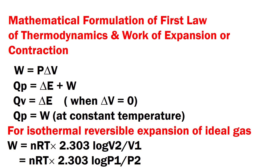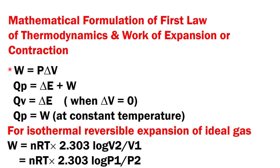Before starting the problems, let's recapitulate the formulae. The pressure-volume work done by the gas or done on the gas is given by constant pressure P into change in volume. The heat exchanged at constant pressure, according to the first law of thermodynamics, equals the change in internal energy plus the pressure-volume work. When work is done by the gas, the sign is negative; when work is done on the gas, the sign is positive.